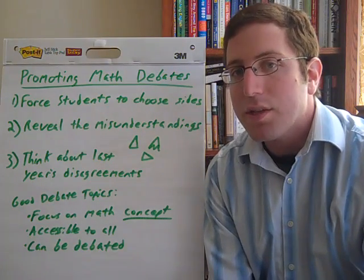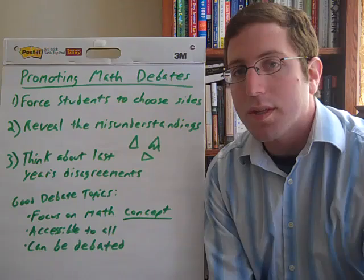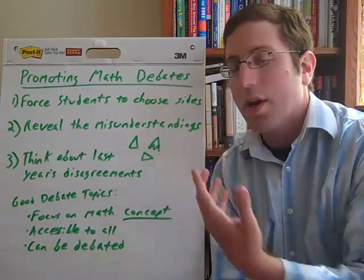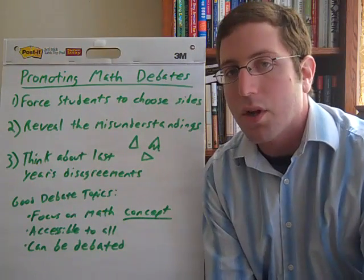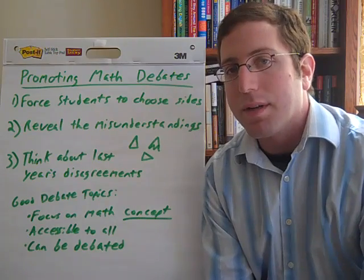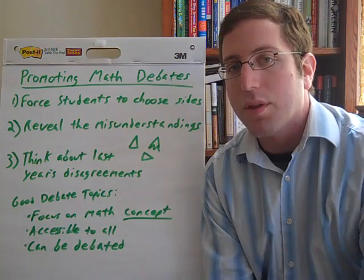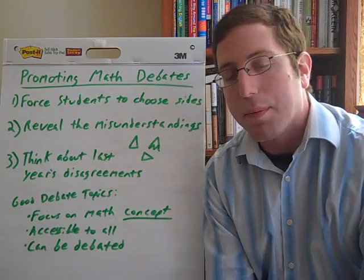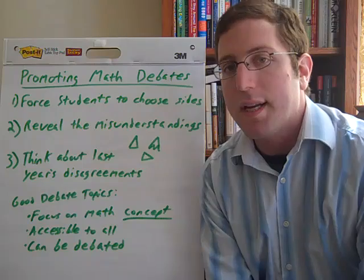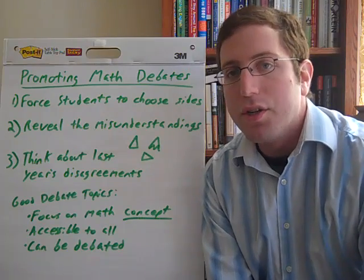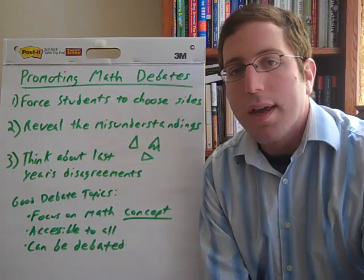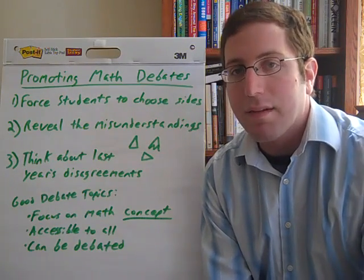By doing this, you'll show students that a shape that might look like a triangle to them off the top of their heads actually cannot be defended when you think about the properties of a triangle. This is how you can reveal the misunderstanding. Other visual examples can work for that as well.